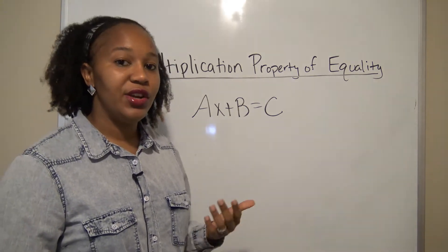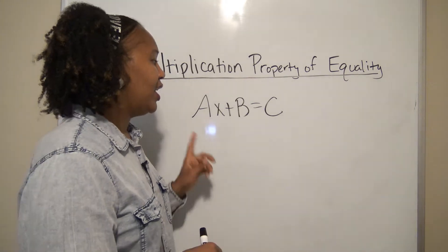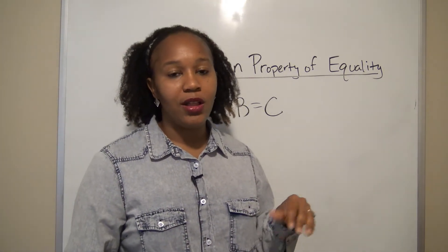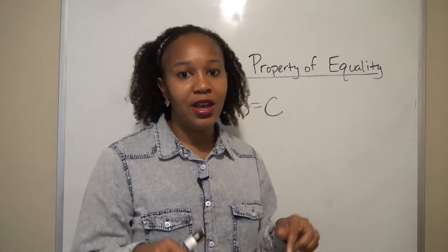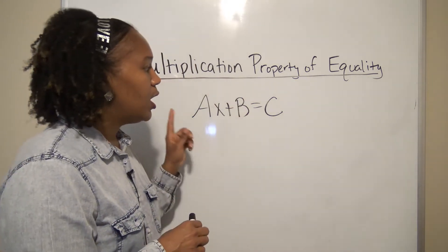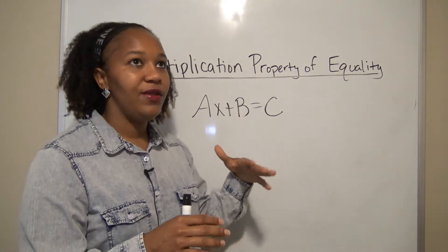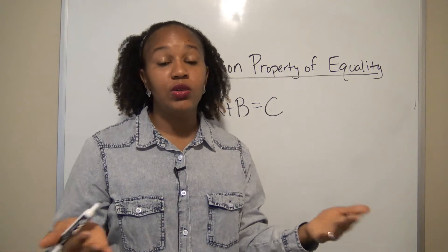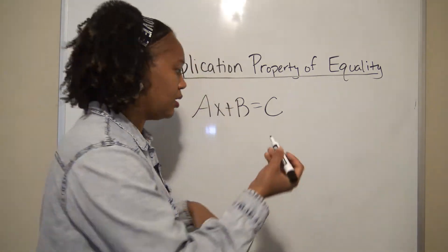Whenever you solve linear equations, the goal is to get x on the side by itself. We talked about the addition property of equality in a previous video — I'll include the link in the description. The addition property tells you that if you want to add something to both sides you can do it, as long as whatever you do to one side you do to the other.